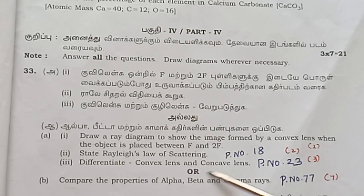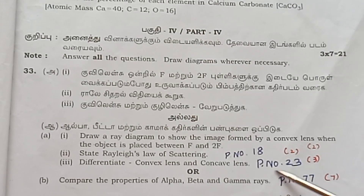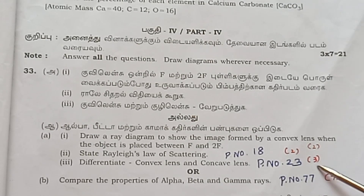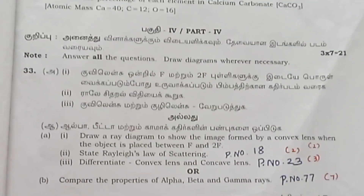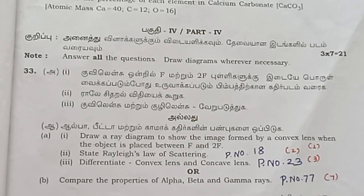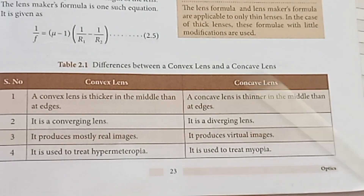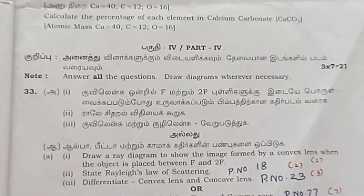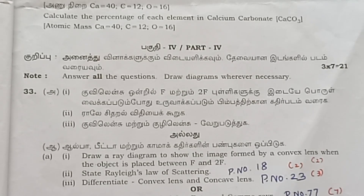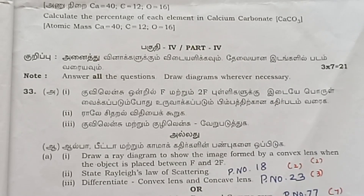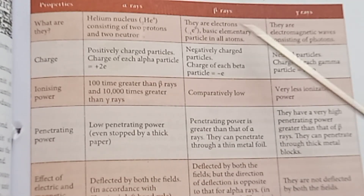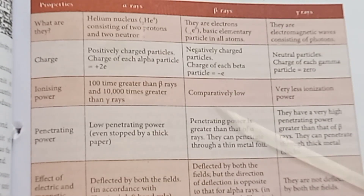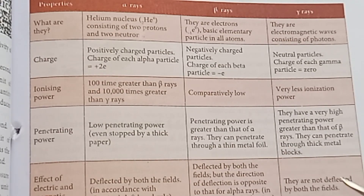Third part: Differentiate convex lens and concave lens — page number 23, carrying 3 marks, with 4 points to write. Also remember the properties of alpha, beta, and gamma rays — page number 77, 7 marks tabulation.